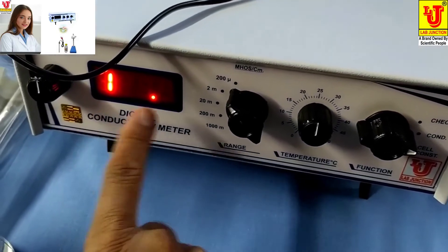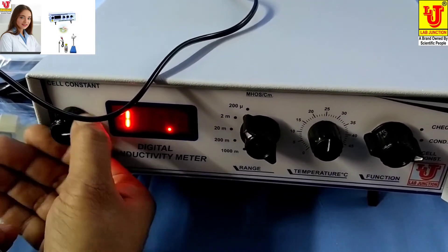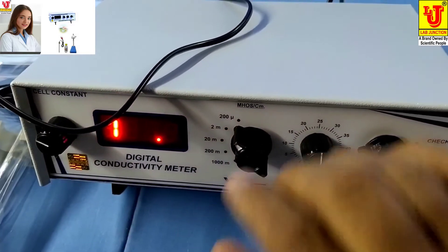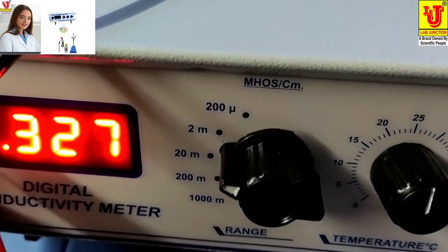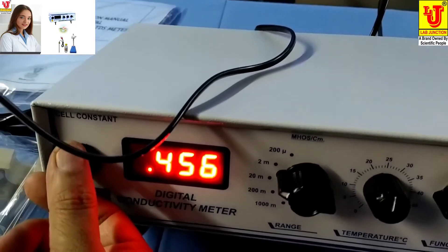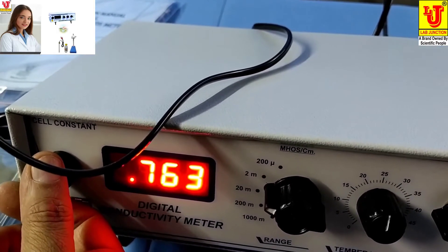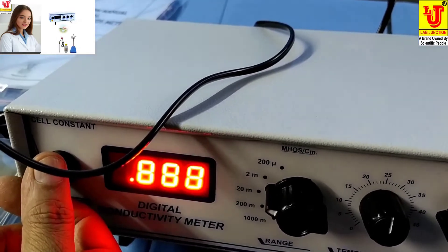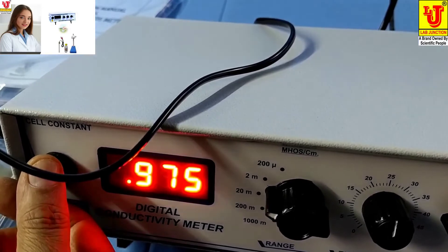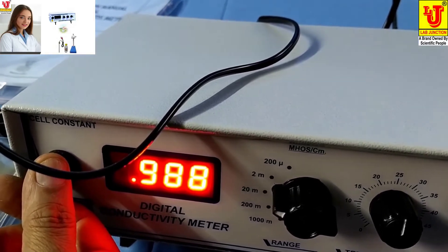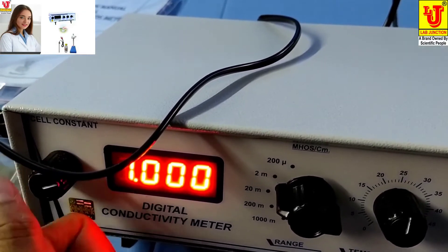This is our range on the first position. Now you can set it to the second range and adjust it to your standard solution value of 1 millisiemens. Now your digital conductivity meter is calibrated and ready for use.